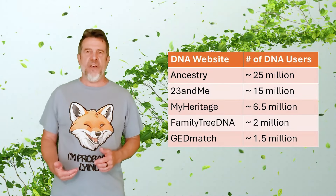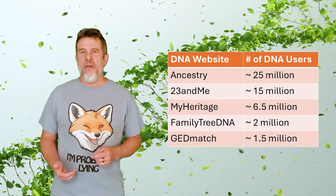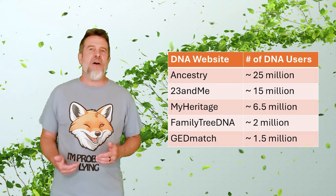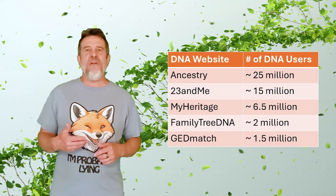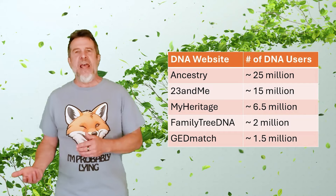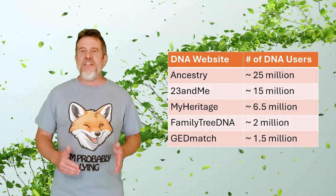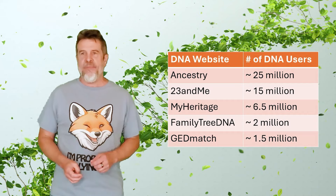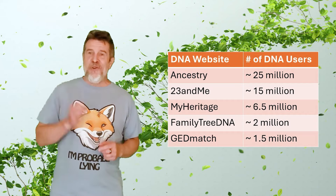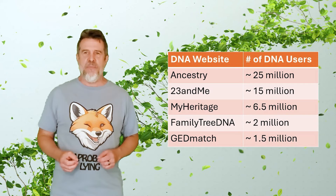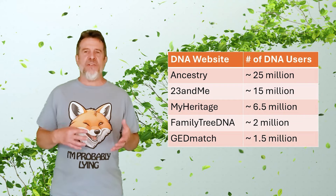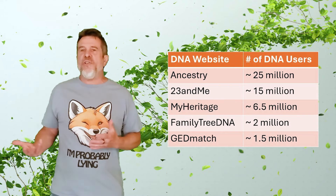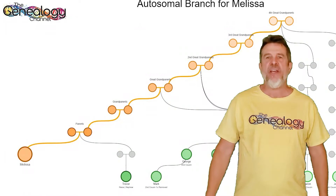What you can get out of the major DNA websites is only as good as the number of users subscribed. Here's a quick chart with some rough numbers: Ancestry has over 25 million users, 23andMe about 15 million, MyHeritage about 6.5 million, Family Tree DNA about 2 million, and GEDmatch about 1.5 million. Guess which site has the most users and provides the fewest genetic tools? Bingo — Ancestry. Conversely, the site with the fewest users has the best tools: GEDmatch. If I'm trying to get a cluster or a genetic matrix from a site with very few users, it will be garbage in and garbage out.